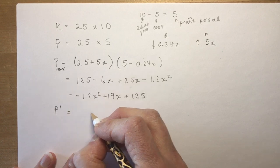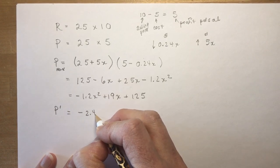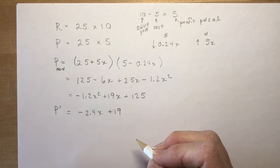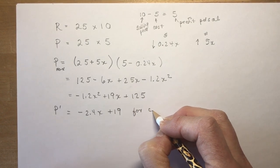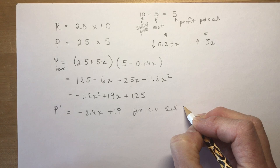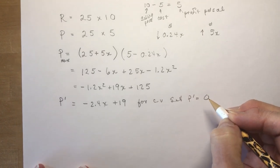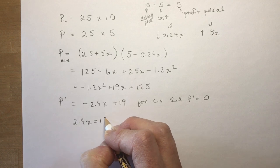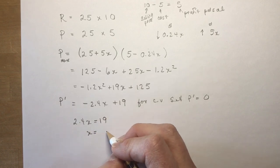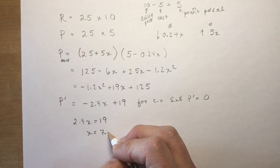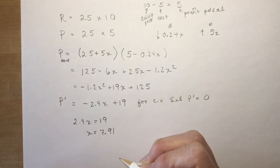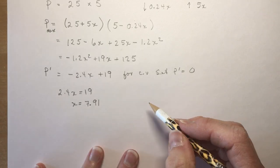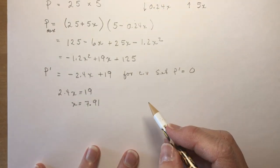Now I'm going to take the derivative. I'm going to call it P'. So -2.4X + 19. And for critical values, set P' equal to zero, and I get 2.4X is equal to 19, and X is equal to 7.91.